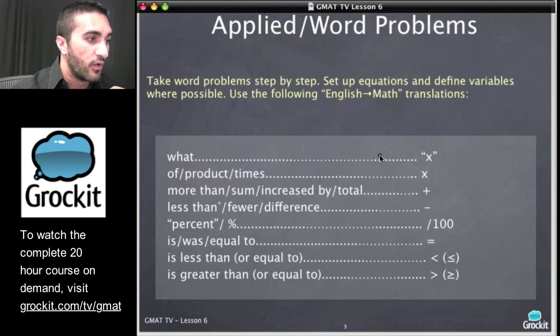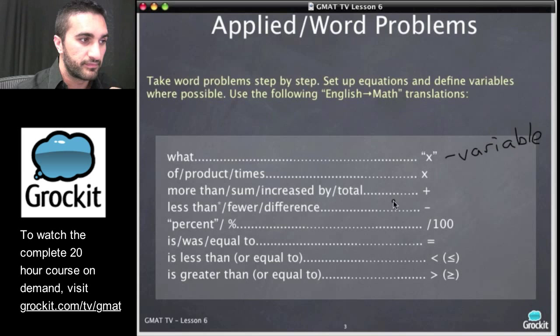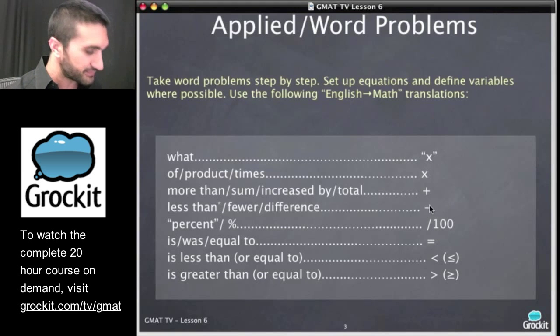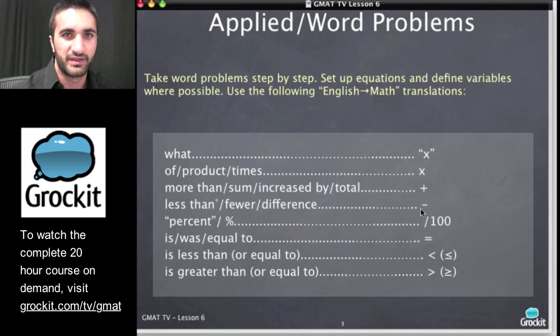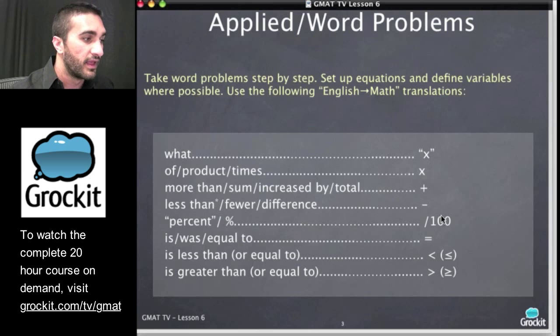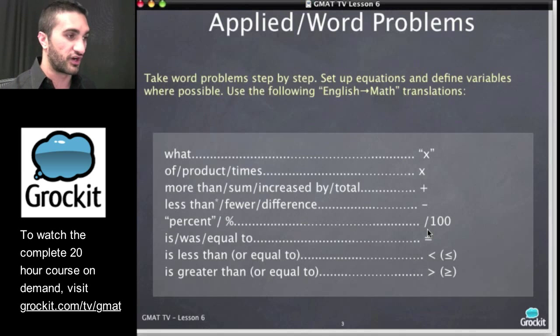We want to set up equations and define variables where possible. To talk about some translations from English to math: when we see the word 'what' in a question we can replace it with a variable like x. When we see the word 'of' or 'product' or 'times' we can replace it with multiplication. If we see the words 'more than,' 'sum,' or 'increased by' we can replace it with a plus. If we see 'less than,' 'fewer,' or 'difference' we can replace it with a minus. If we see 'percent' or the percent sign we can divide whatever came before it by a hundred. If we see 'is,' 'was,' or 'equal to' we can replace it with an equal sign, and same thing for inequalities.